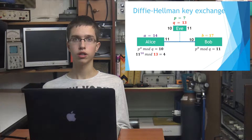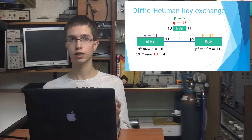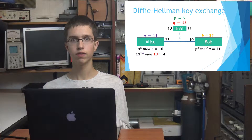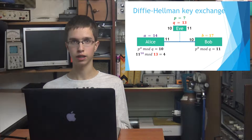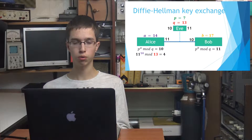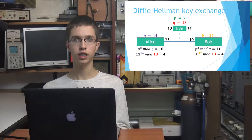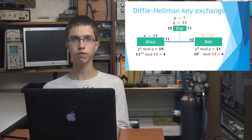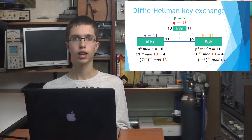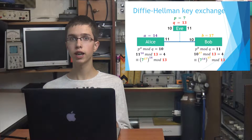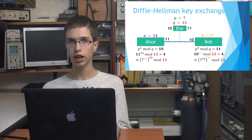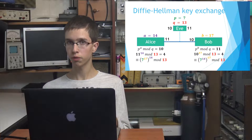Bob does analogously the same thing. He takes Alice's public number, 10, and raises it to the power of his own private number b, which is 17, and does the modular arithmetic with q equal to 13, which is 10 to the power of 17 modulo 13, which is 4. So Alice and Bob have gotten the same number. Why is this so? The answer is they've done actually the same calculations, but in a not so obvious way. Let's prove that.